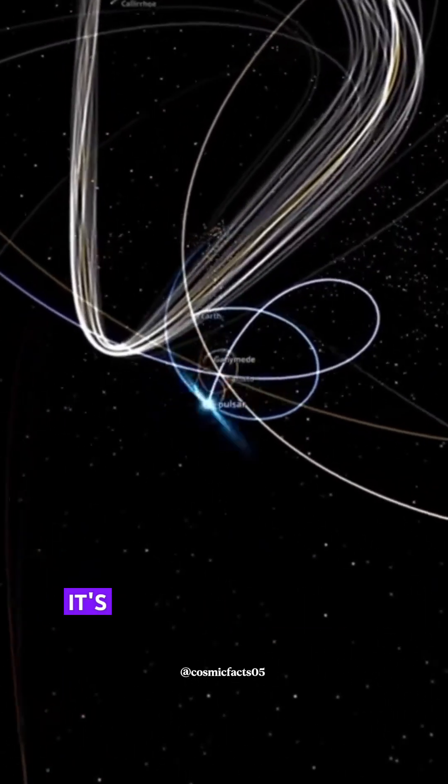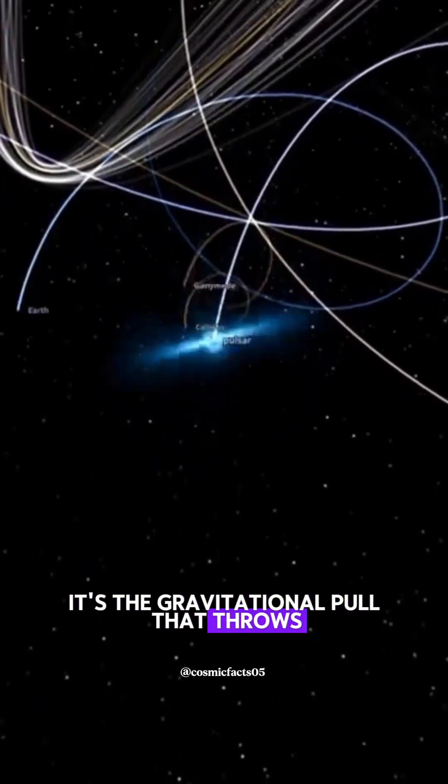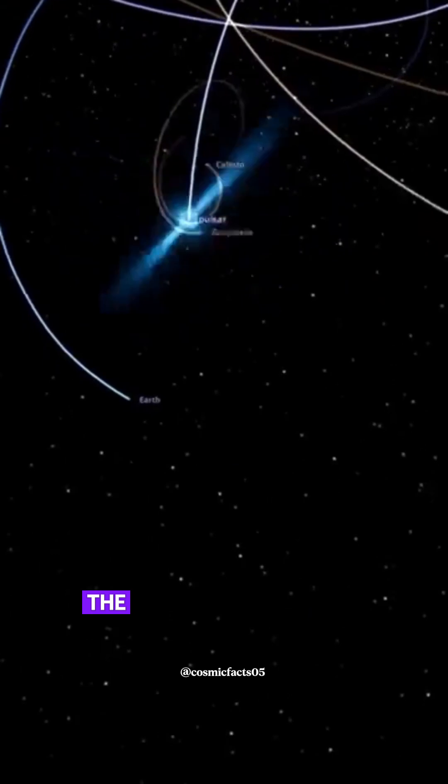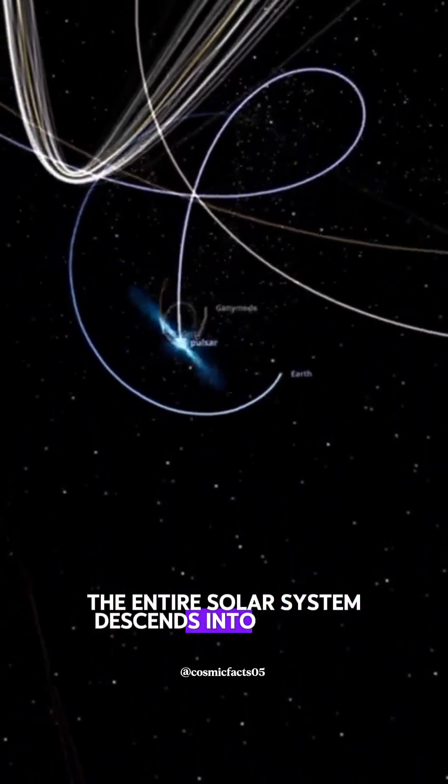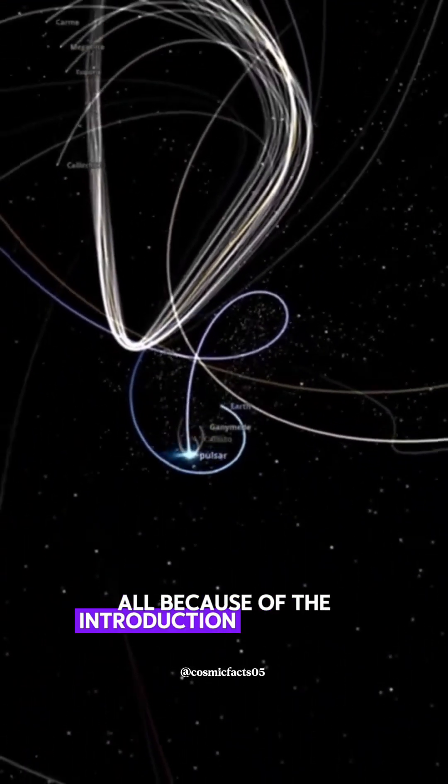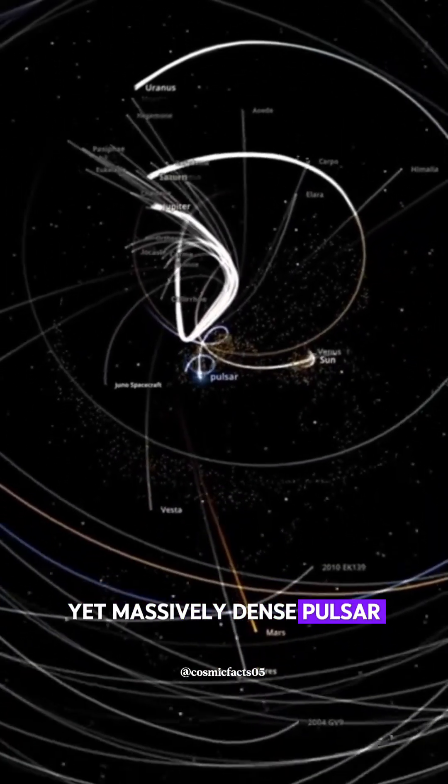But in this scenario, it's the gravitational pull that throws our solar system into chaos. The entire solar system descends into madness, all because of the introduction of this tiny yet massively dense pulsar.